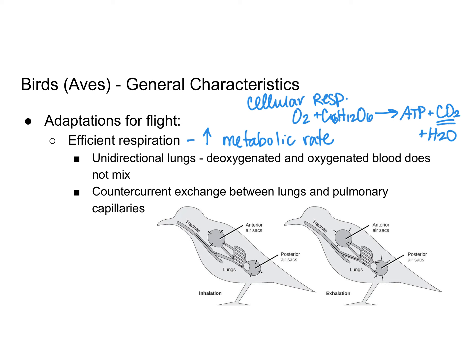Interestingly, birds have what are called unidirectional lungs — one-way or one-direction lungs. This allows deoxygenated and oxygenated air to not mix with each other in the lungs. In contrast, when humans inhale, air mixes with residual deoxygenated air already in our lungs, making us less efficient than birds at gas exchange. Unidirectional lungs ensure that the maximum amount of oxygen enters the body and the maximum amount of carbon dioxide leaves, maximizing the efficiency of energy production.